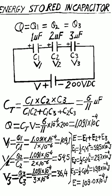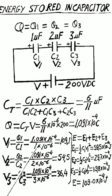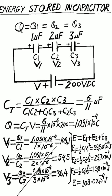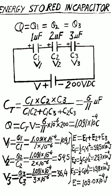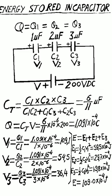Voltage V1 across capacitor C1 equals Q1 divided by C1. With Q1 equal to 1.091 × 10⁻⁴ divided by 1 × 10⁻⁶, V1 equals 109.1V. Similarly, V2 equals 54.5V and V3 equals 36.4V.